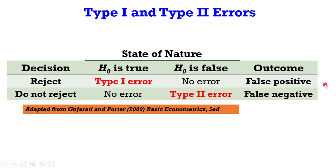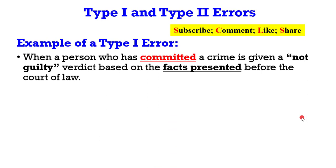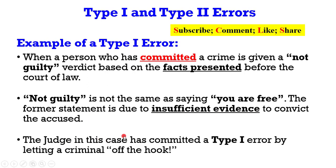So try to look at that table and know the differences between type 1 and type 2 errors. Now let's take an example of a type 1 error, borrowing a leaf from the crime literature. When a person who has committed a crime is given a not guilty verdict based on the facts presented before the court of law — remember, not guilty is not the same as saying you are free — the formal statement is simply due to insufficient evidence to convict the accused. The judge in this case has committed a type 1 error by letting a criminal off the hook.